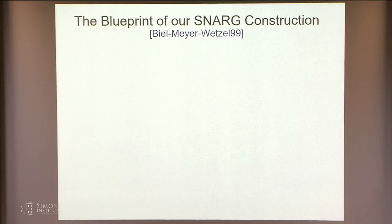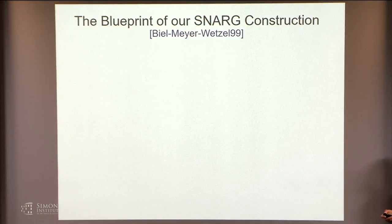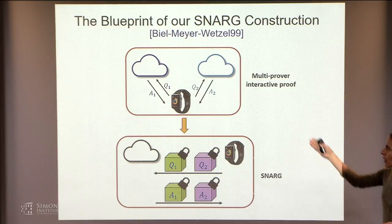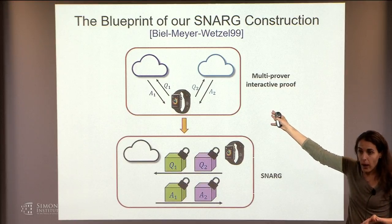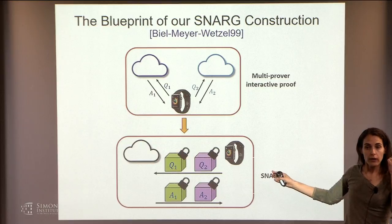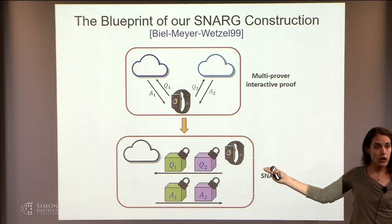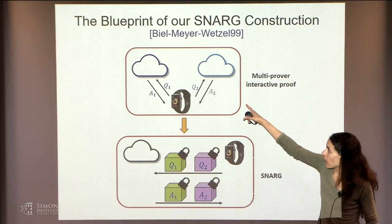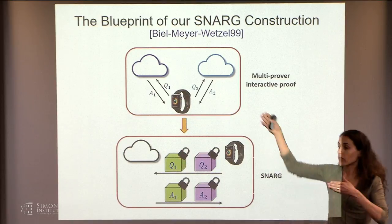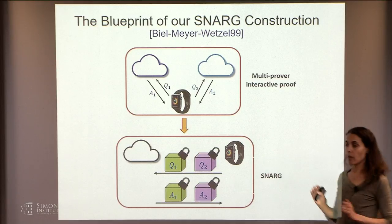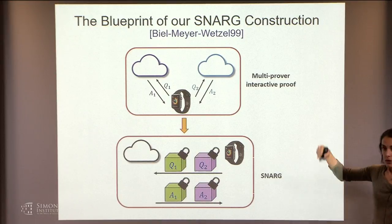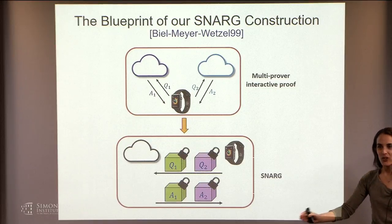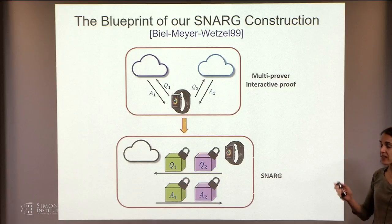Now here comes the fun part — how do we get these SNARGs? This is where quantum, or rather quantum-inspired models, will help us. The basic idea was already proposed in 1999 by Kilian and Micali, and the idea is very simple and elegant: take a two-prover or multi-prover interactive proof — an MIP — and convert it to a SNARG, a single-prover non-interactive argument. How? Just take the two queries you would give to each prover and encrypt them using a fully homomorphic encryption scheme.